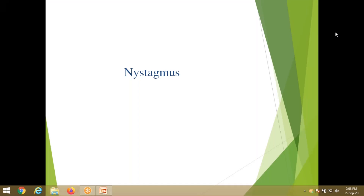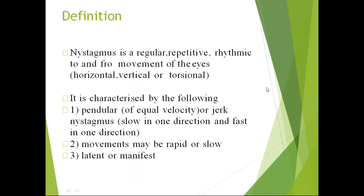So, nystagmus. Nystagmus means the eyeball will move with small movements when you try to focus on an object. It is a regular, repetitive, rhythmic, to-and-fro — that is a pendulous movement. Like a pendulum in a wall clock, the eye will move to and fro. This is the to-and-fro movement of the eyes.